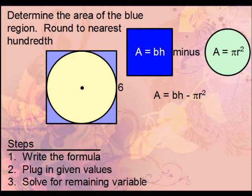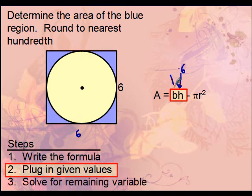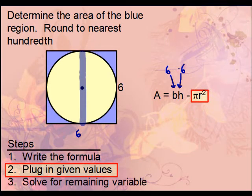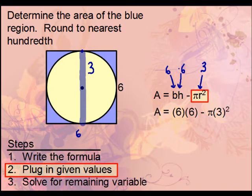For the square, the height is 6 and the entire length is also 6 since it's a square. For the circle, since the full side length is 6, the distance from center to edge is 3, so the radius is 3.